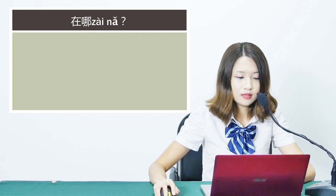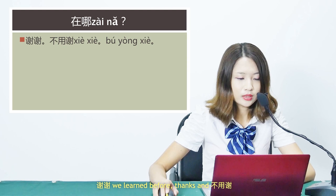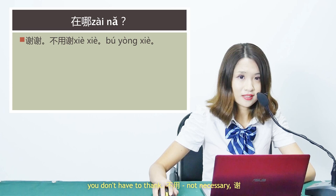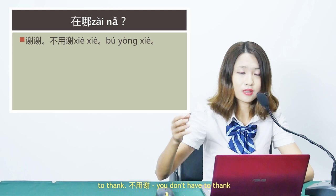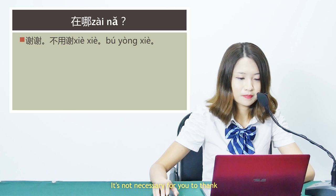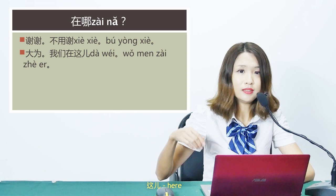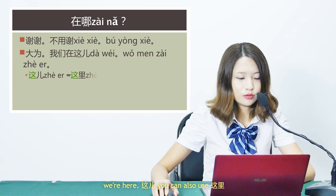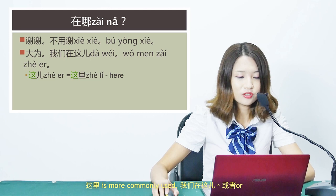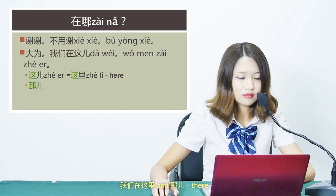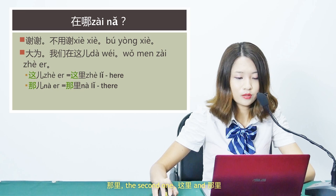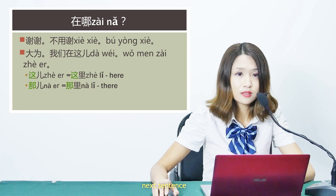下一句 — next sentence. 谢谢 — thank you. 不用谢 — you don't have to thank me; 不用 means not necessary and 谢 means to thank. 大为，我们在这儿 — Dawei, we are here. 这儿 means here; you can also say 这里, which is more commonly used. 哪儿 means there, and 那里 is also used for there — again, 这里 and 那里 are more commonly used.